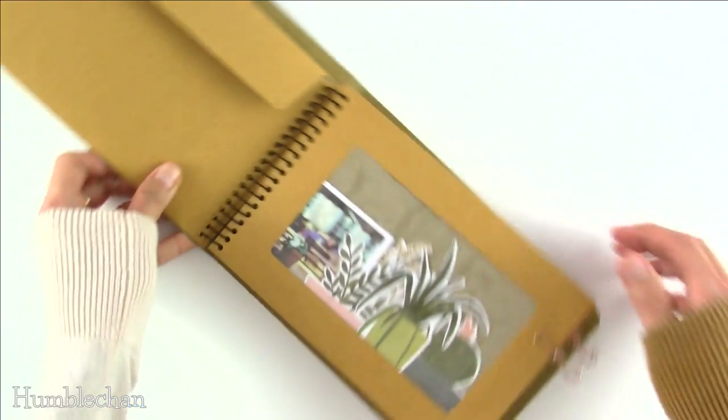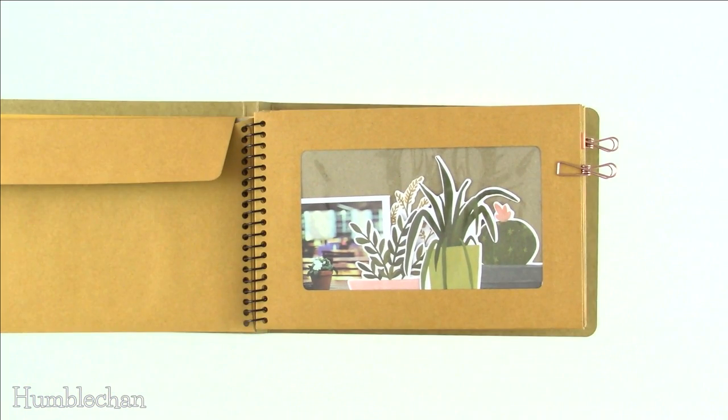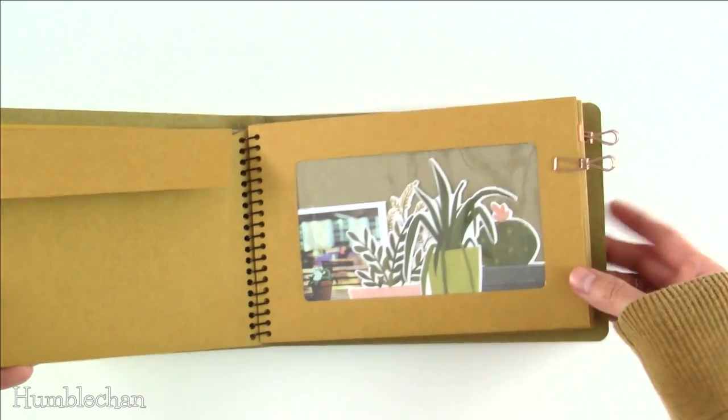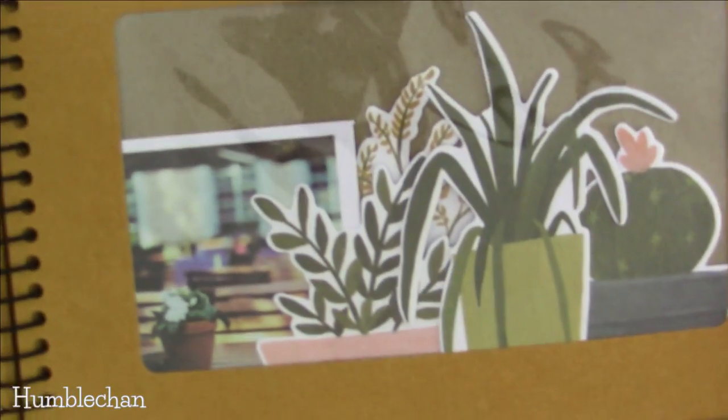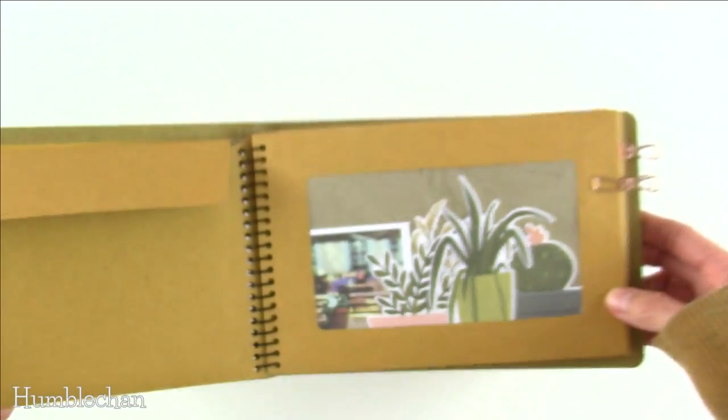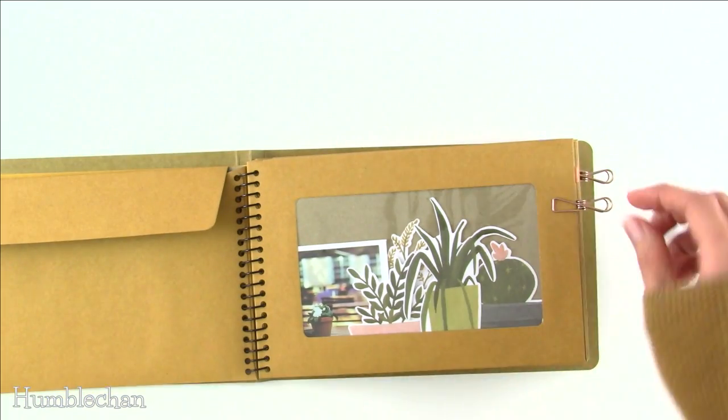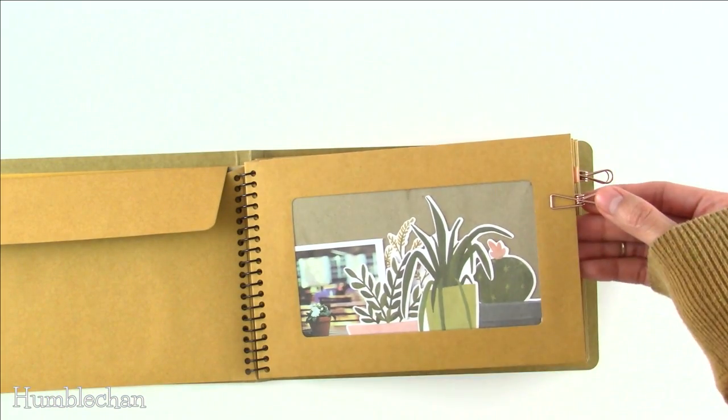In this next one, she loves house plants. So I had to pick out some ephemera with a house plant theme. And just because there's not a whole heck of a lot in this envelope, I put a little clip here. It's a little rose gold paper clip.